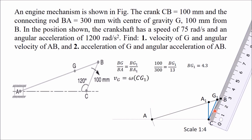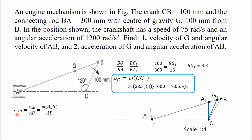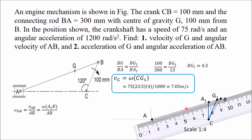CG1 ≈ 23.5 mm. VG = ω × CG1 × scale / 1000 = 75 × 23.5 × 4 / 1000 = 7.05 m/s. For angular velocity of AB: VAB = ω × A1B × scale = 75 × 13 × 4 = 3900 mm/s; ω_AB = VAB / AB = 3900 / 300 = 13 rad/s.